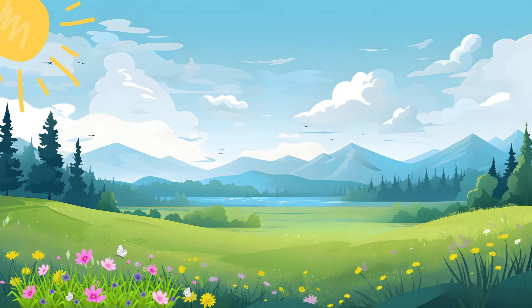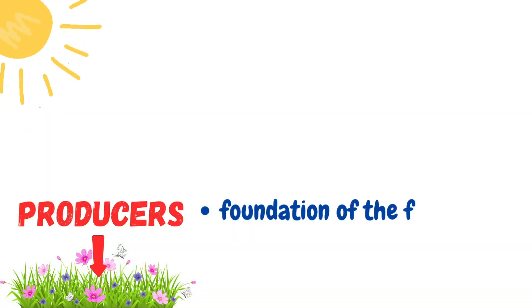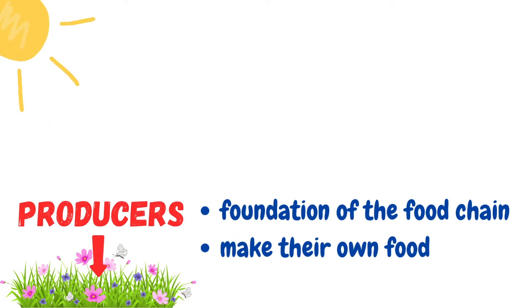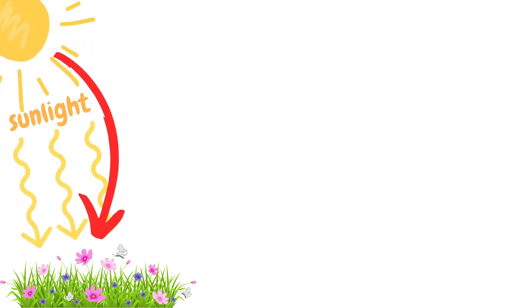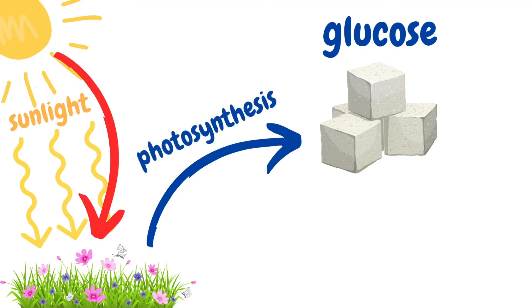Let's take a closer look at a food chain in an ecosystem. It all starts with producers. Producers are the foundation of the food chain. They are living organisms like plants and algae that can make their own food. Using energy from the sun, producers convert carbon dioxide and water into glucose through photosynthesis.